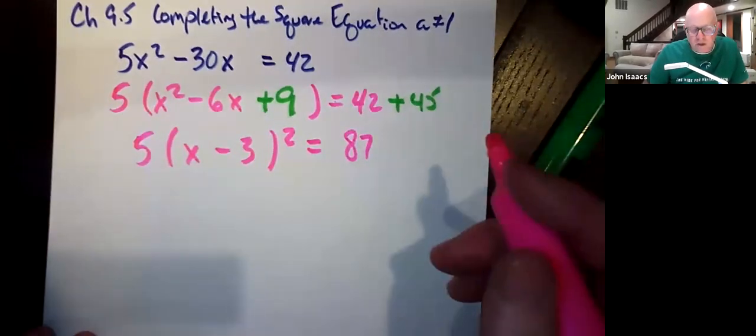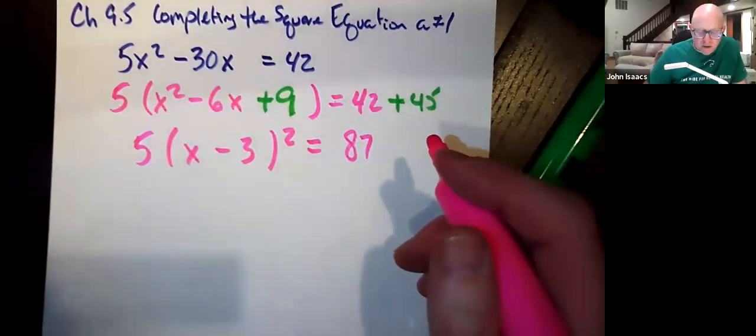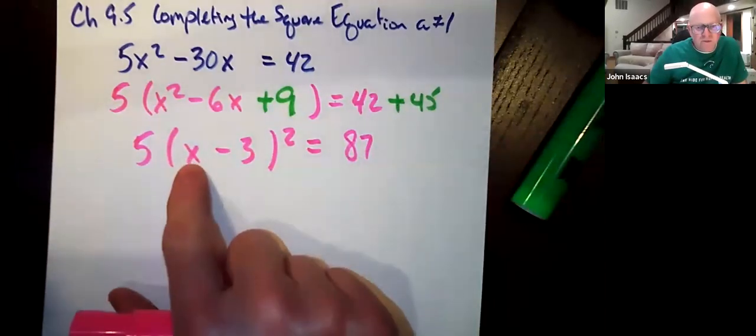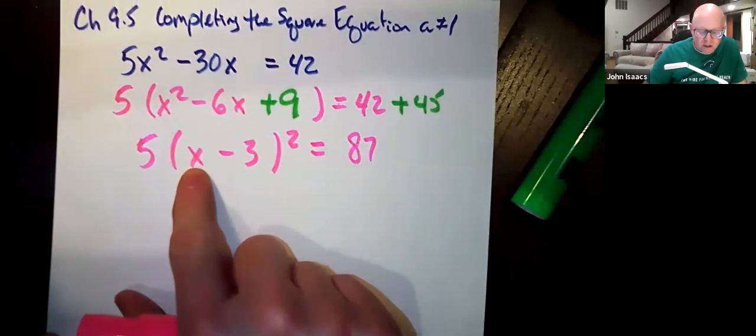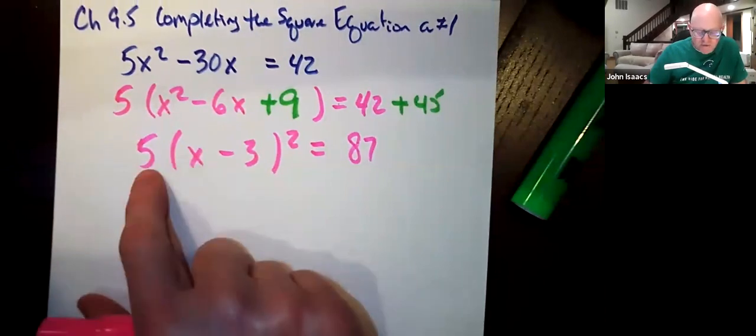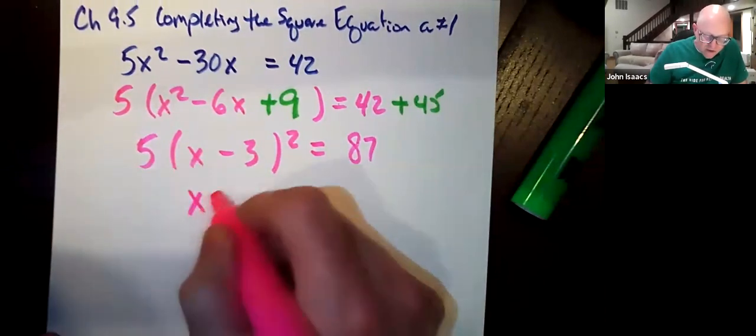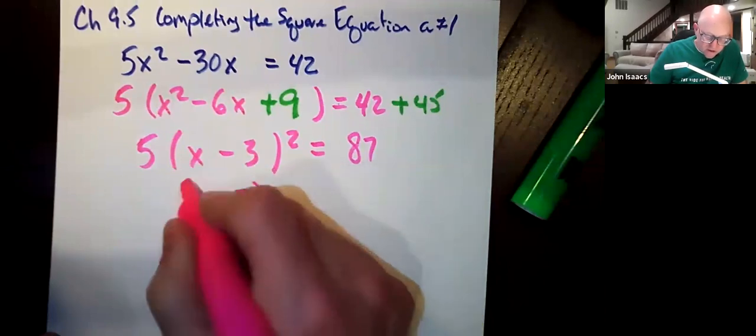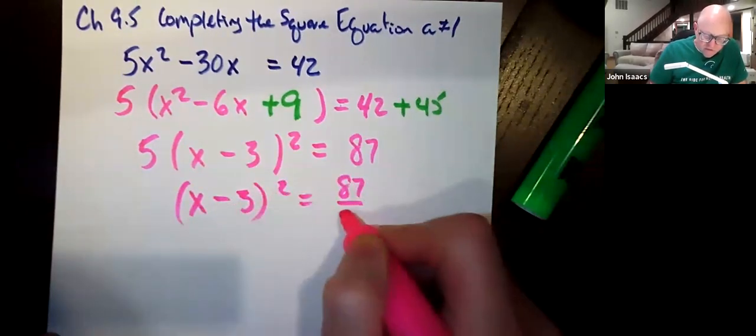Now, the rest, the arithmetic is horrible, but we can solve for x because x is by itself in the equation, just like last time. So here, we're going to divide by 5, get rid of that, x minus 3 squared equals 87 over 5.